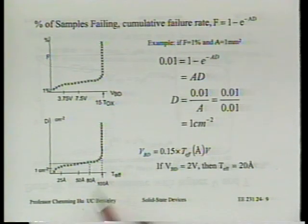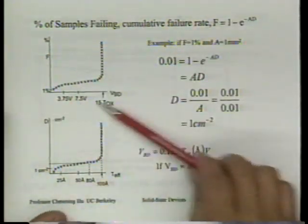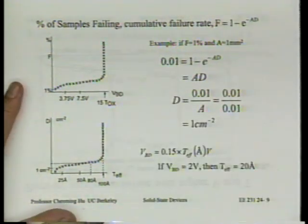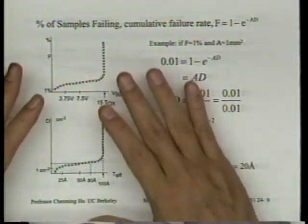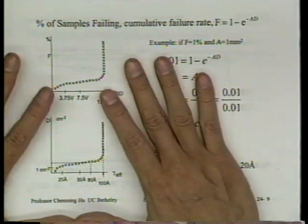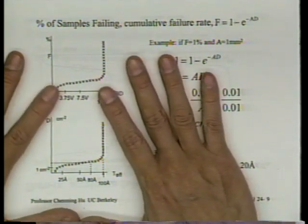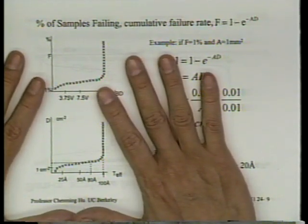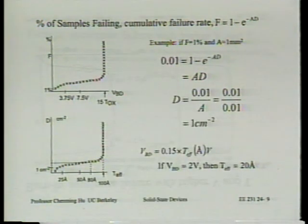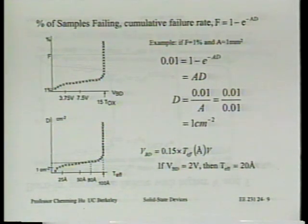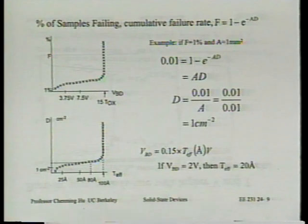Once you have this, you go backwards — this becomes the characteristic of a particular fab. Say you're using company XYZ as your foundry. If you have this information, you know how to answer: suppose you have a product with X centimeters squared of oxide — what percentage will fail at what time and at what voltage?